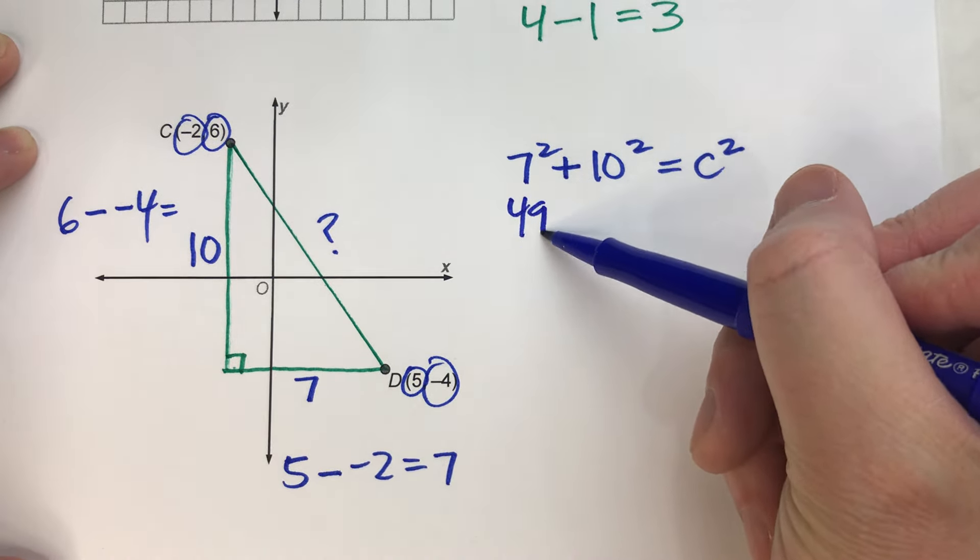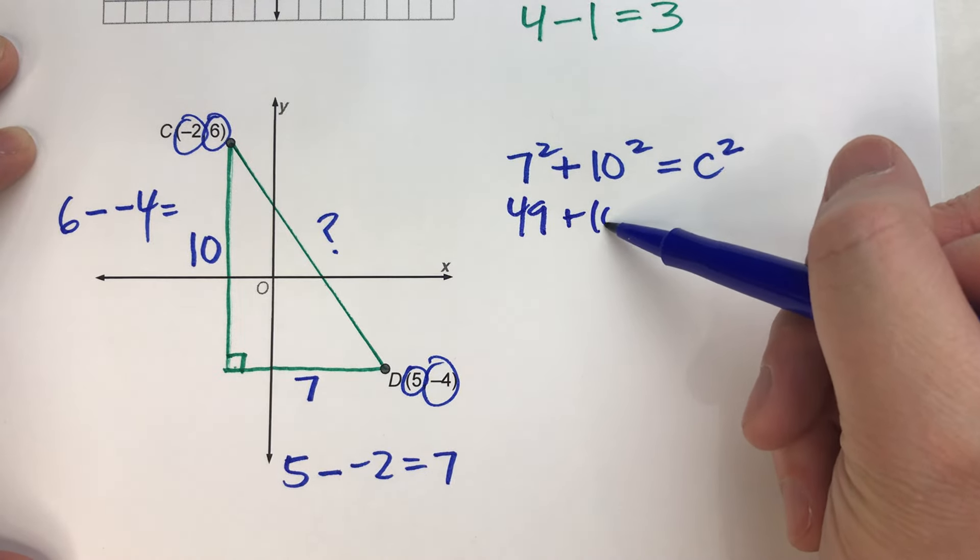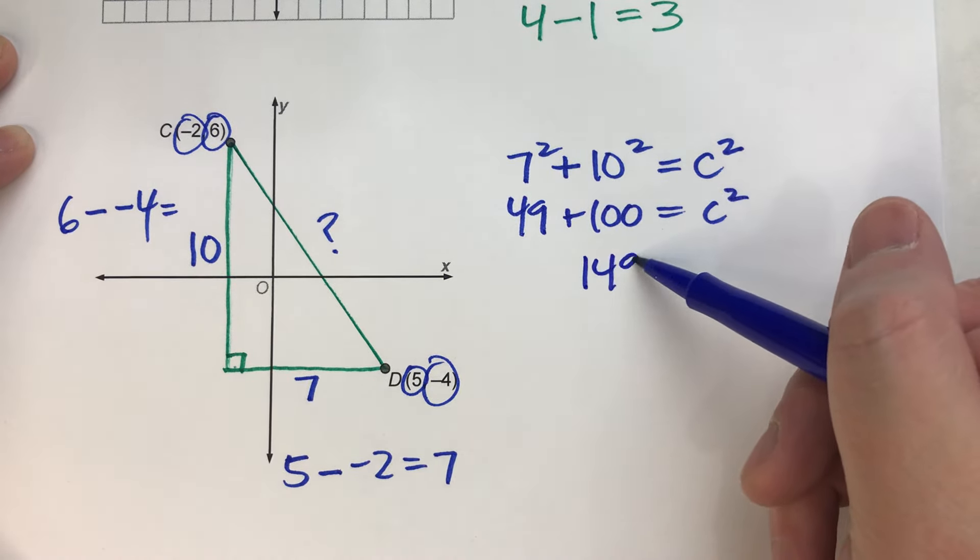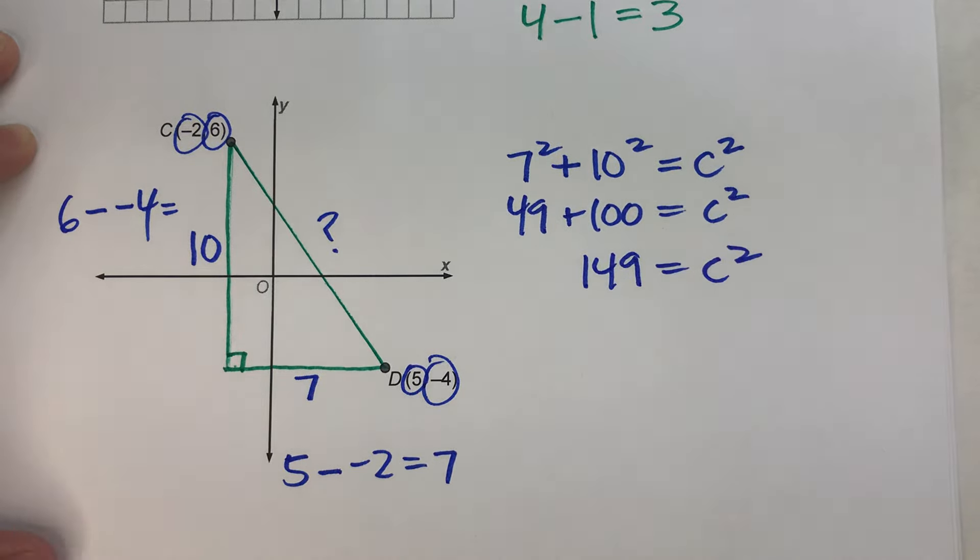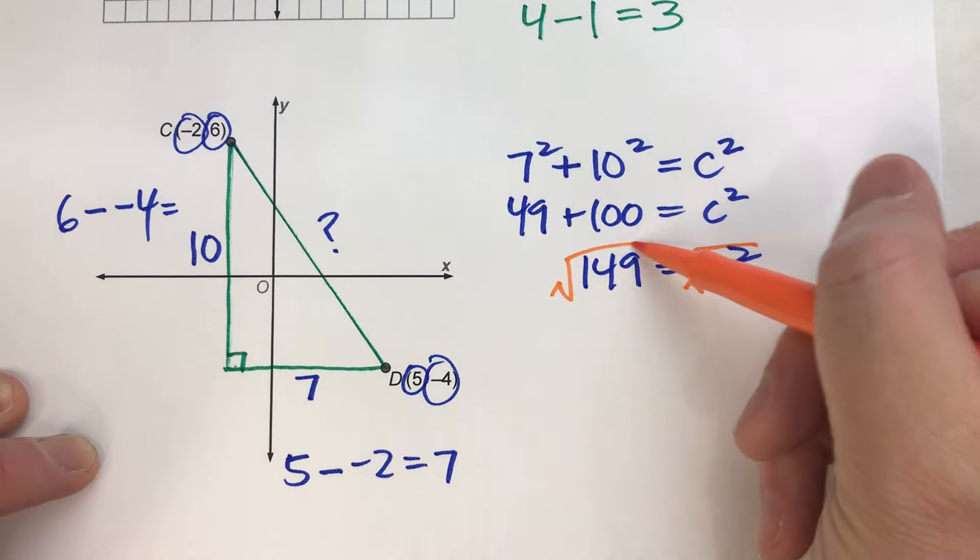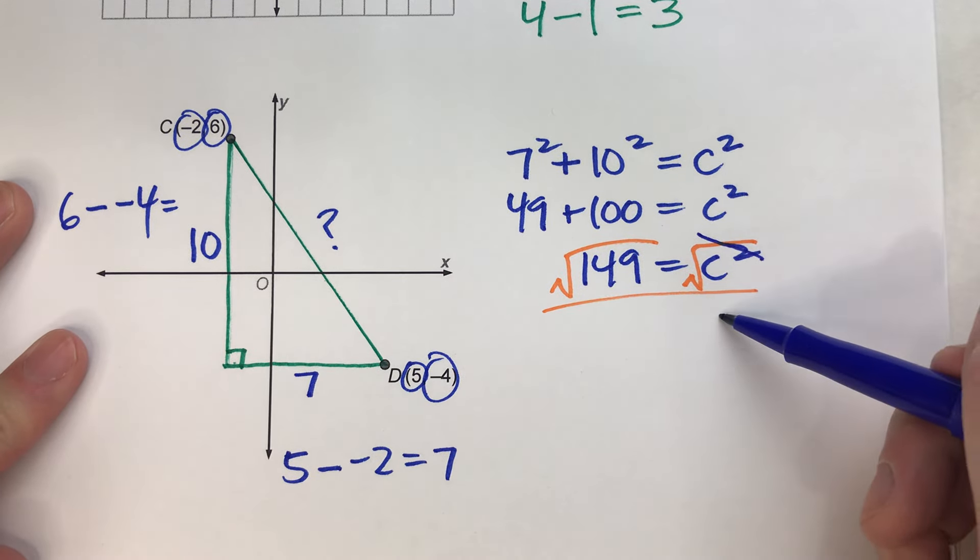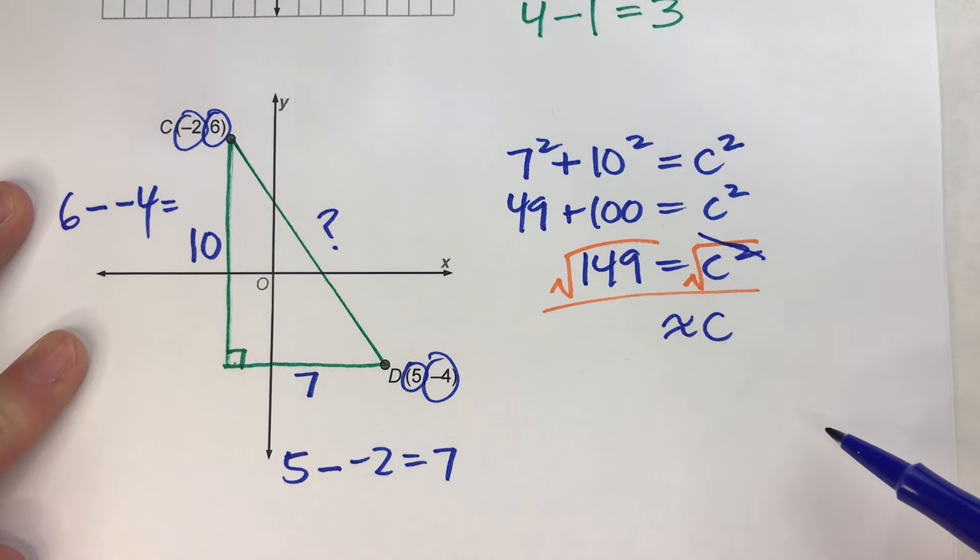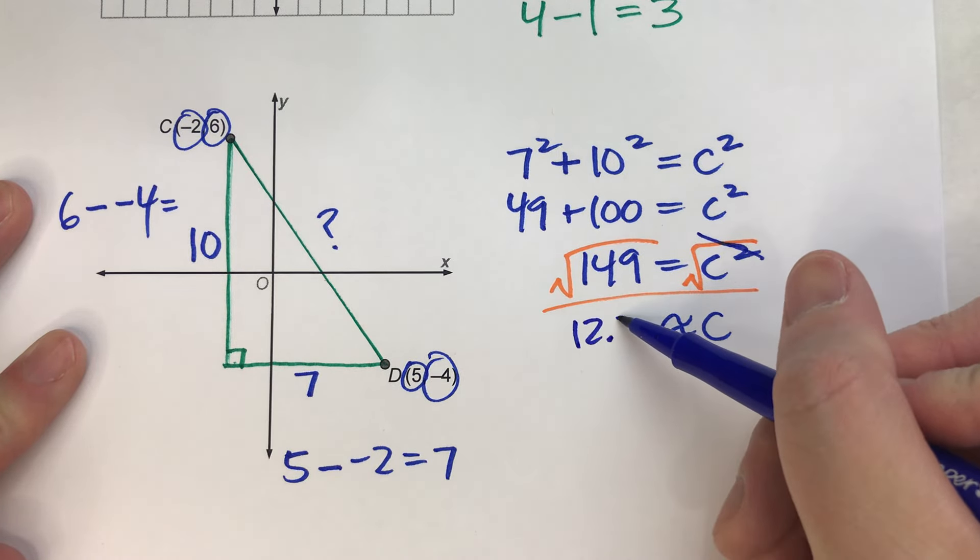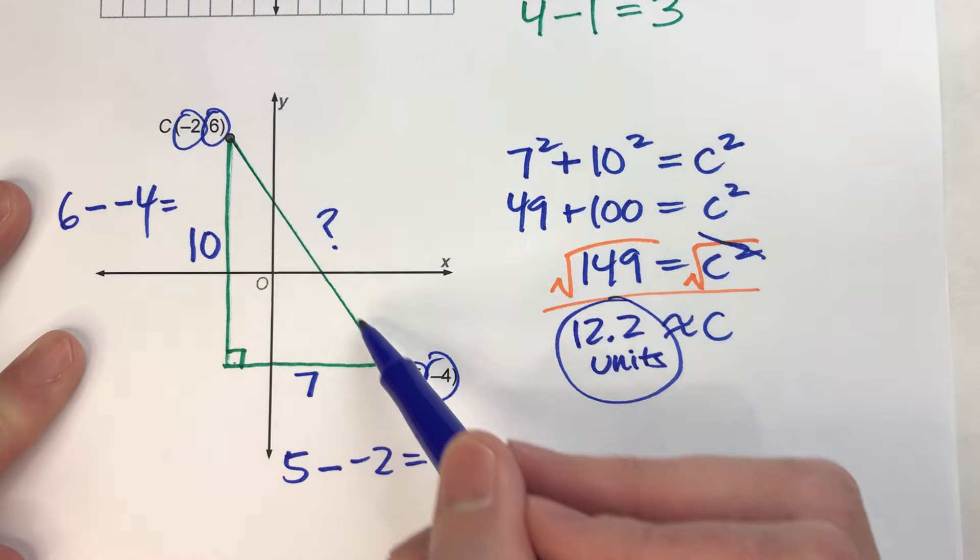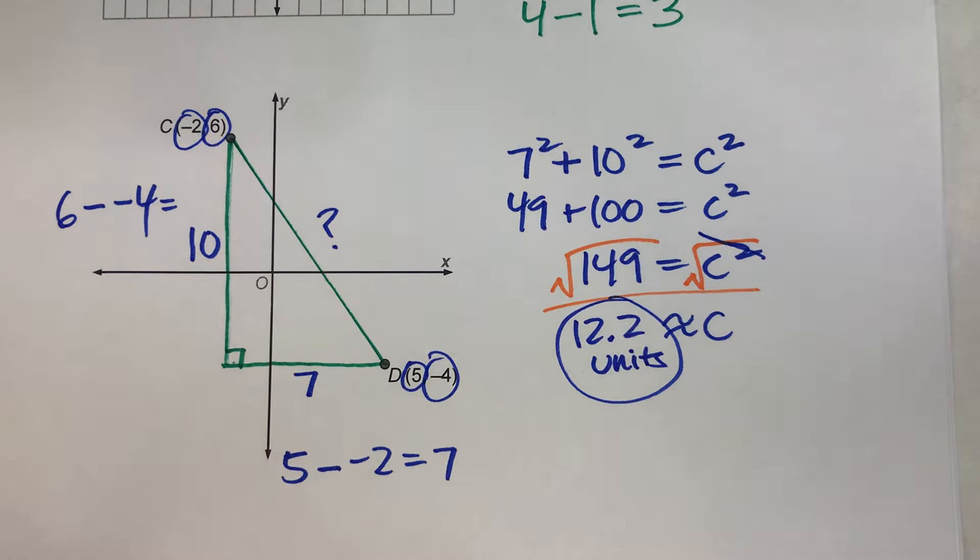So, 7 squared is 49. 10 squared is 100. And if I add these two together, I get 149 equals C squared. If I want C, I'm going to have to square root both sides. When I do that, C comes out to approximately, and on my calculator, the square root of 149 is about 12.2 units. So, this distance between the two points is about 12.2 units.